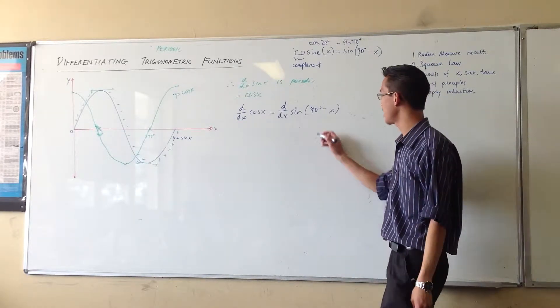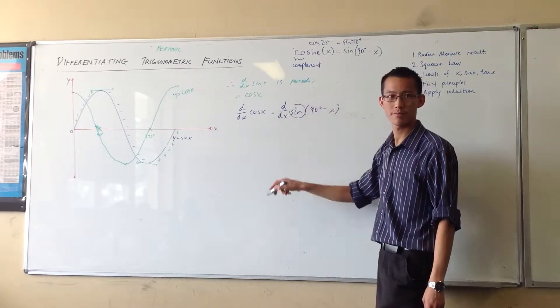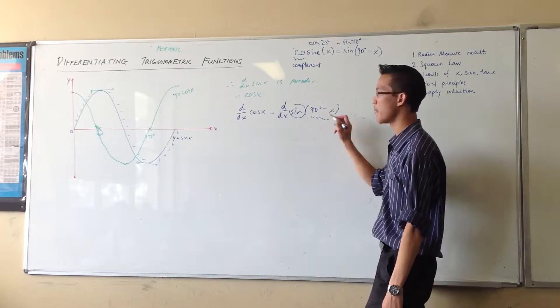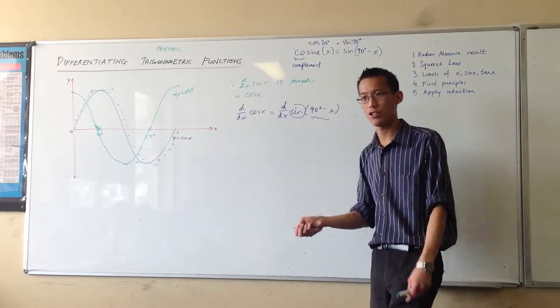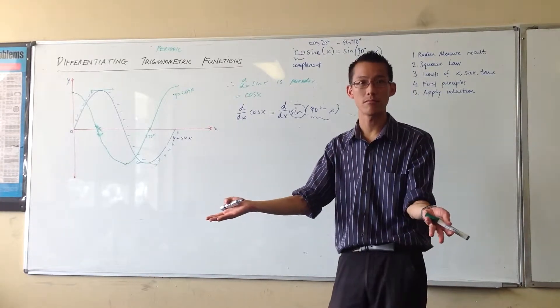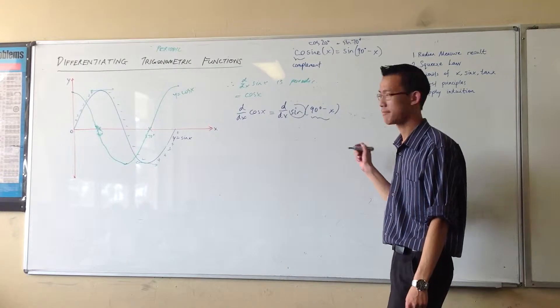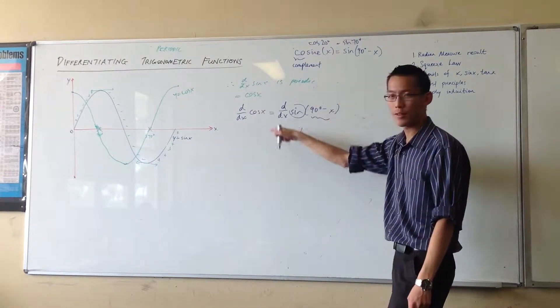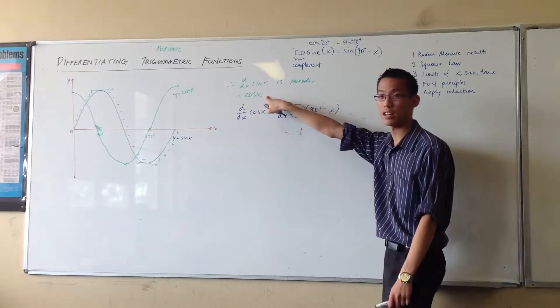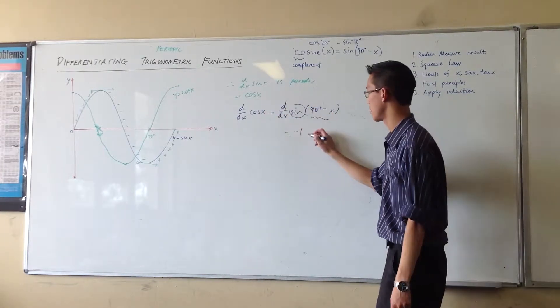This is a chain rule, isn't it? Sine is a function, and then you've got 90 degrees minus x, which is also a function. How does chain rule work? You do the inside, then you do the outside. What's the derivative of the inside? It's just the coefficient. What's the derivative of the outside? It's sine, so it should turn into cos.